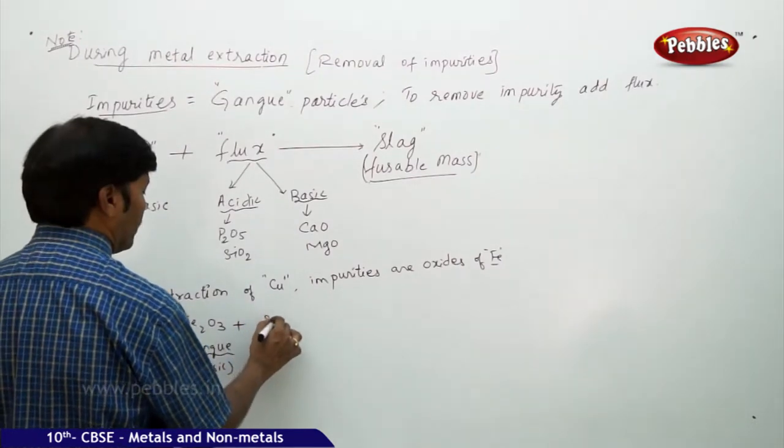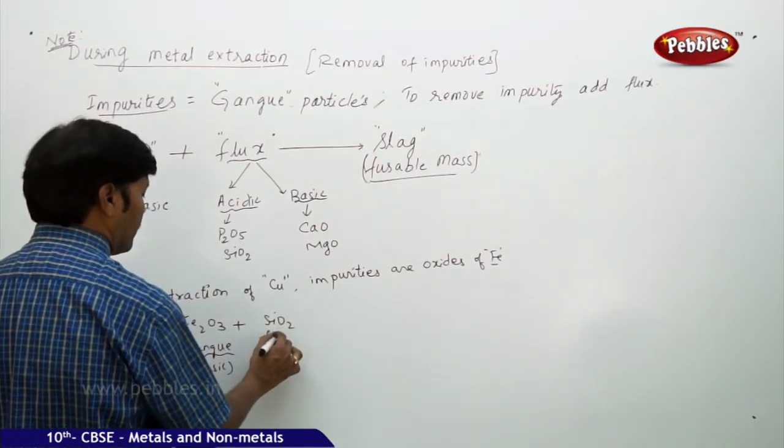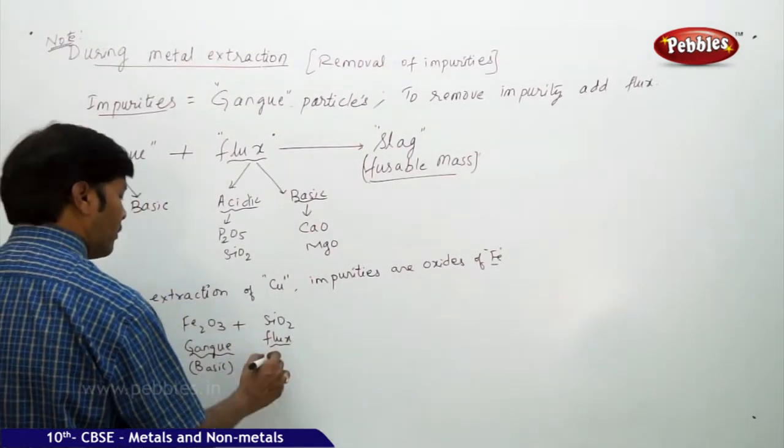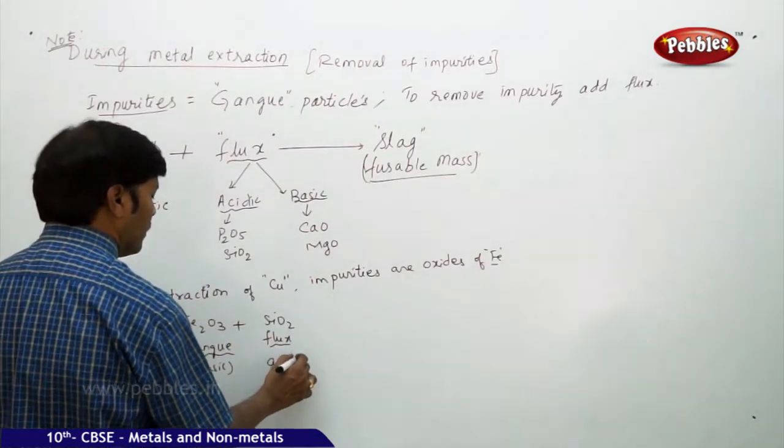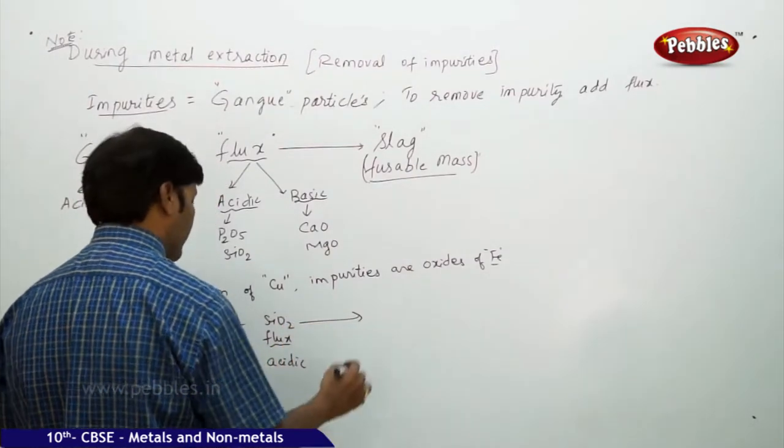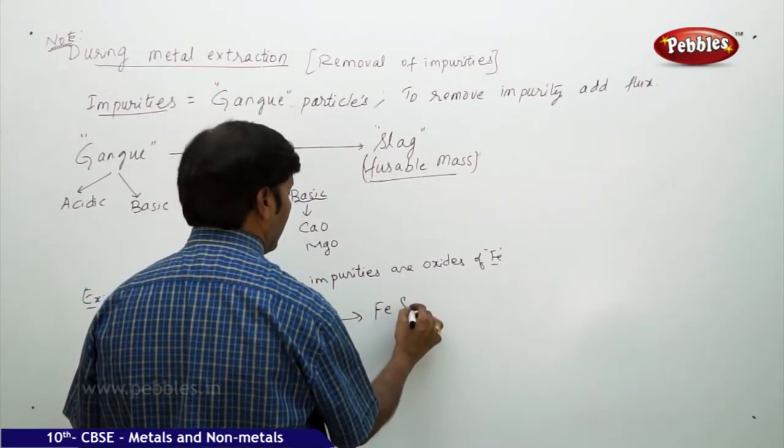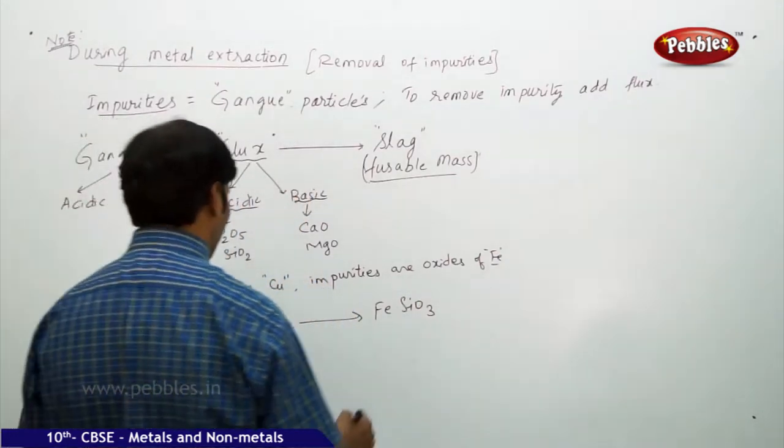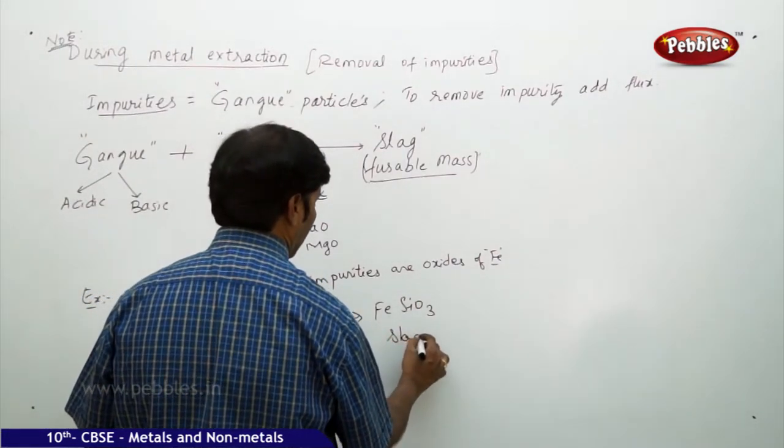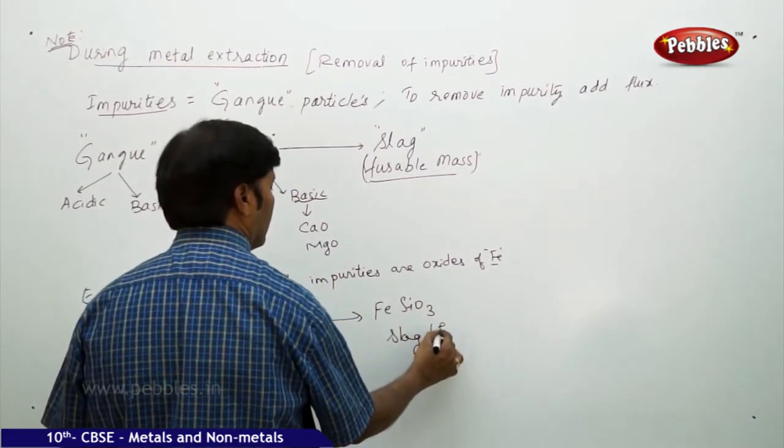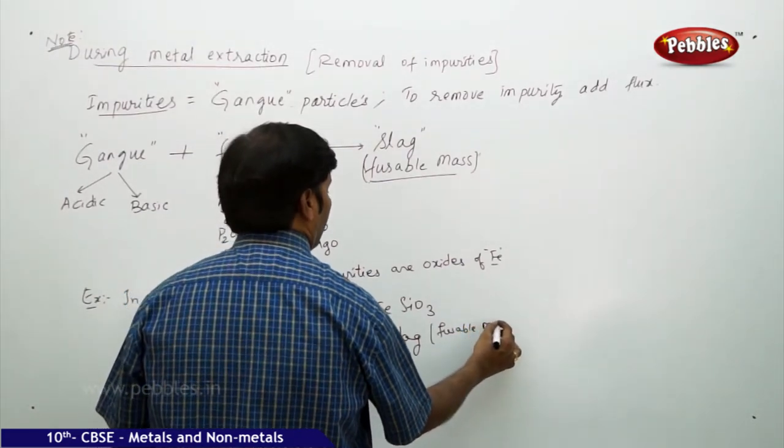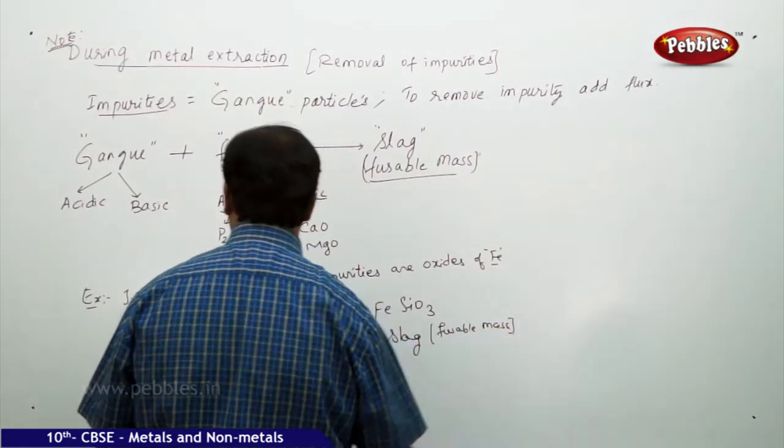We should add flux, which is acidic. This is flux. Gang is basic, so flux should be acidic. Therefore, you get over here, that is FeSiO3, FeSiO3, this is slag, fusible mass.